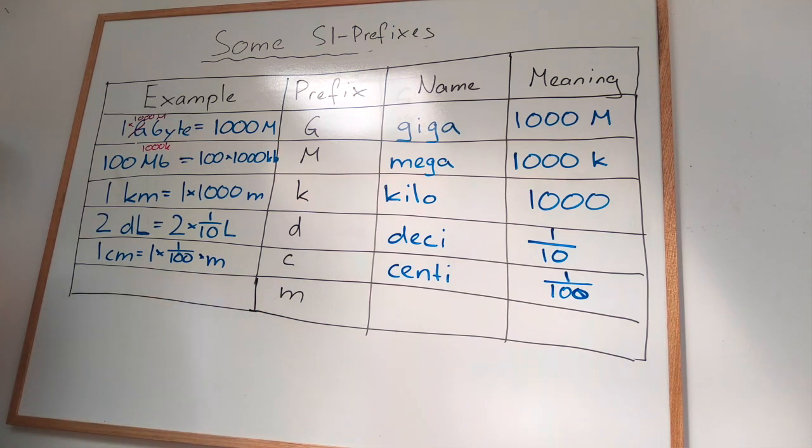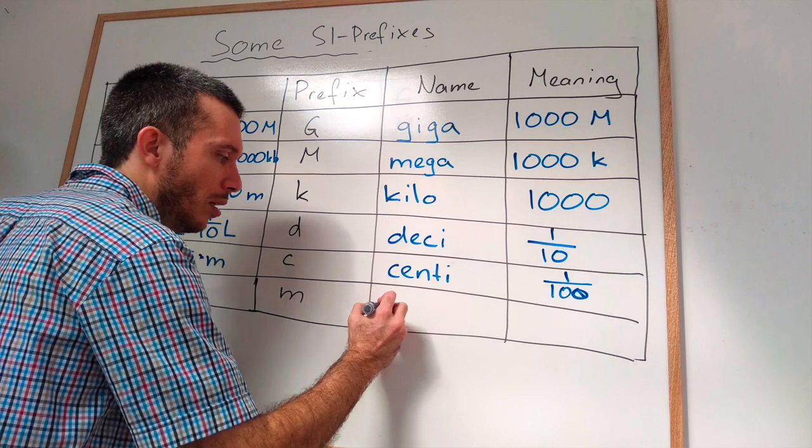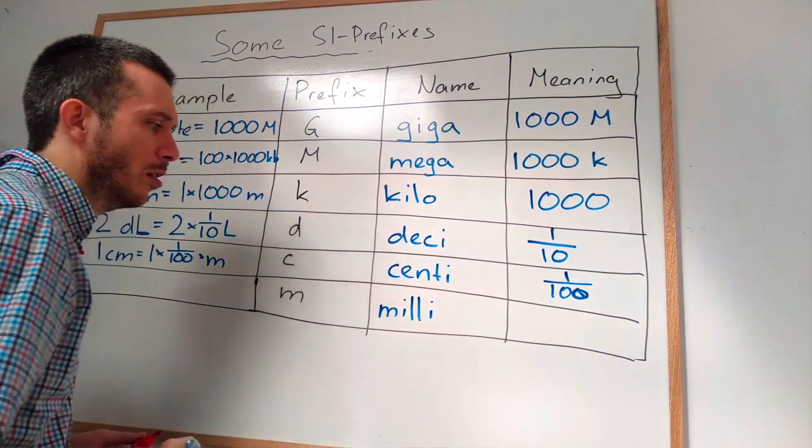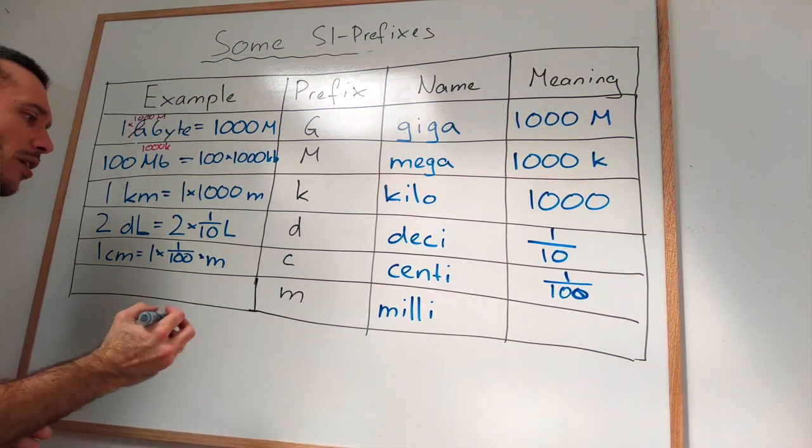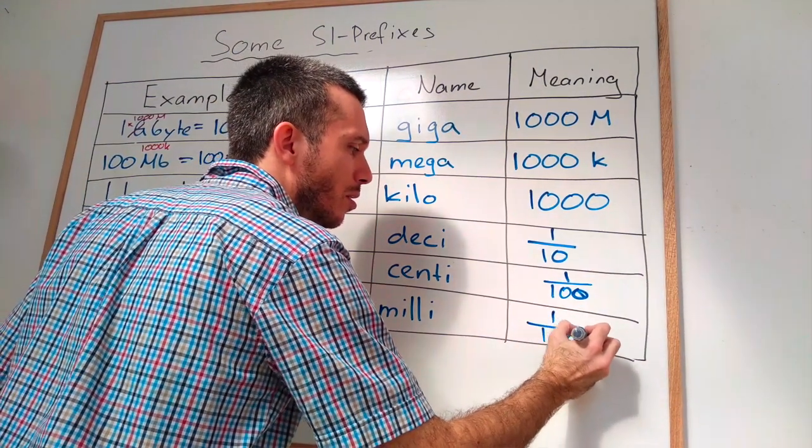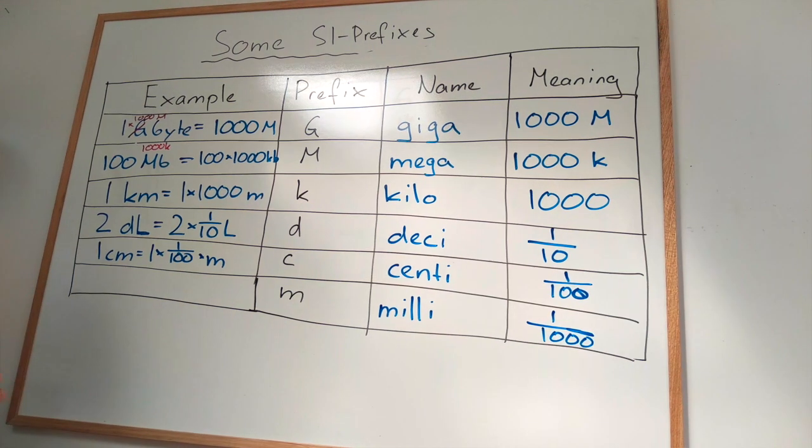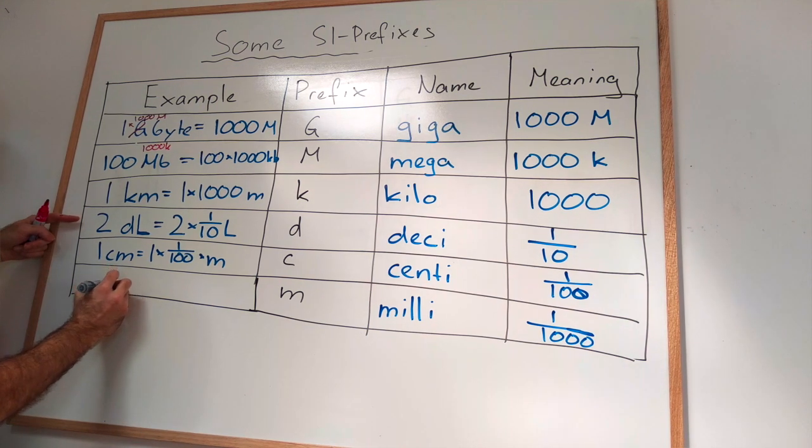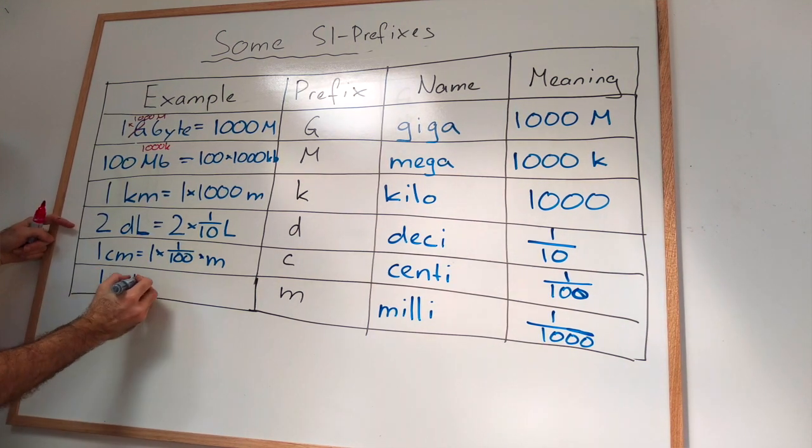And then the last one in this table, the M is the milli. Mill from French again. So you have one over 1000 over here. And what should we use? Let's go with milliliters again. So let's say one milliliter. How much is one milliliter?